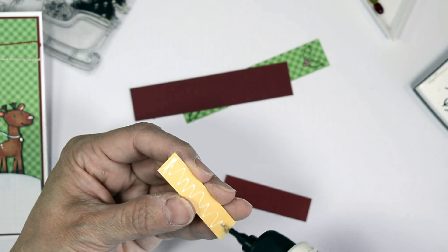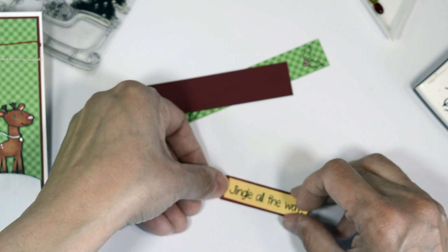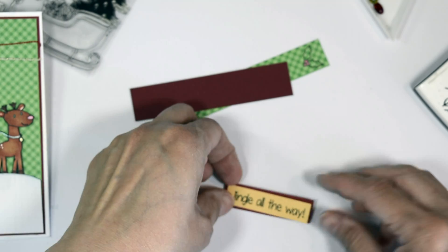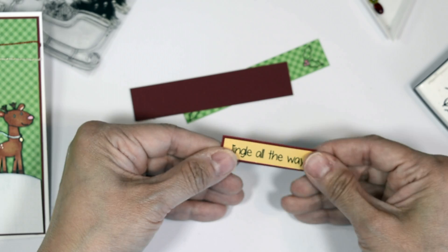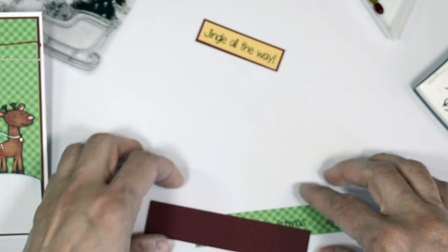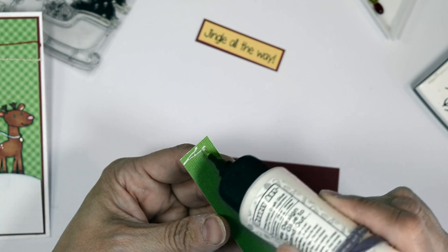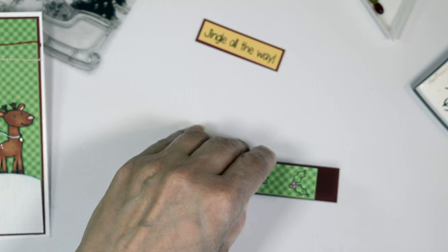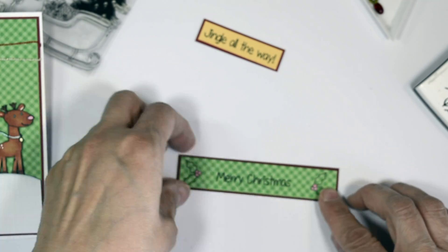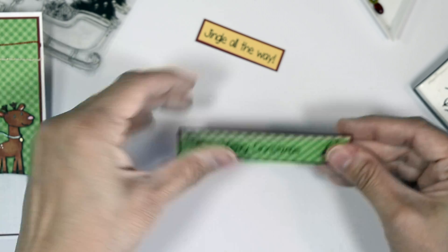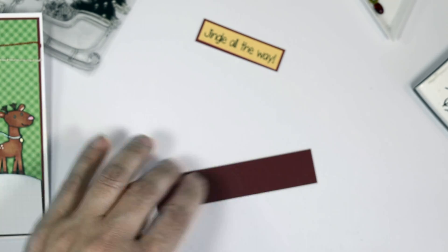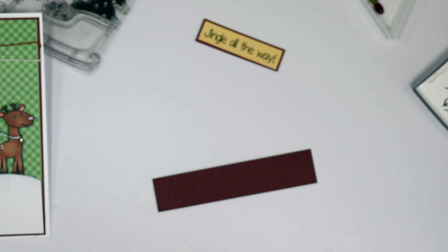So then I'm going to ink up my stamp with some VersaFine onyx black ink and then I remove the washi and everywhere where that was masked off won't have any ink on it. So now only the Merry Christmas will be inked and I can stamp that onto my little sentiment strip. And that's how you can use it without tearing or cutting it apart. So now I'm going to add here our sentiment onto the red cardstock that we're going to mat it on there. So you're trying to keep the continuity of that bit of red popping out throughout the card.